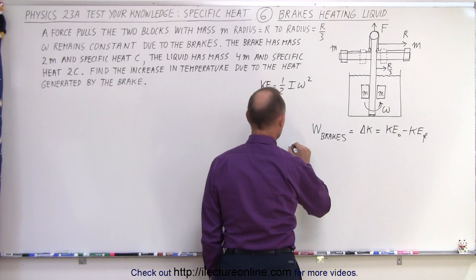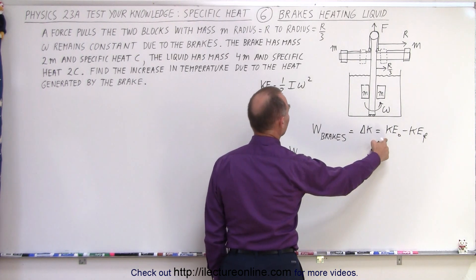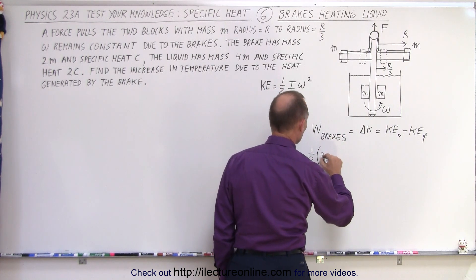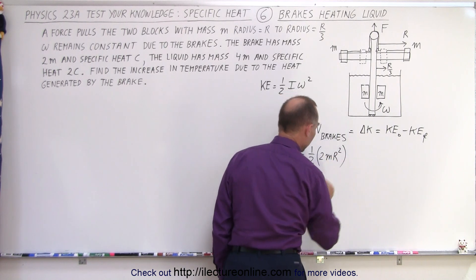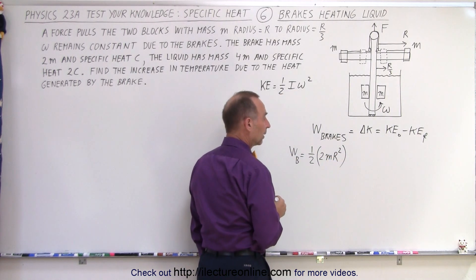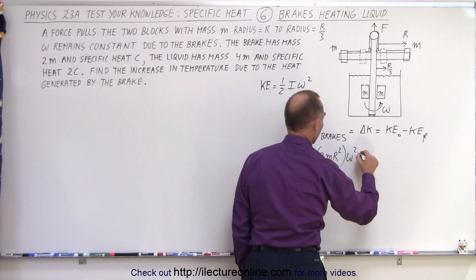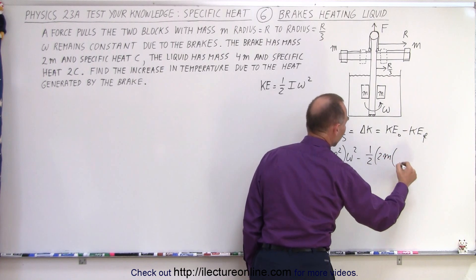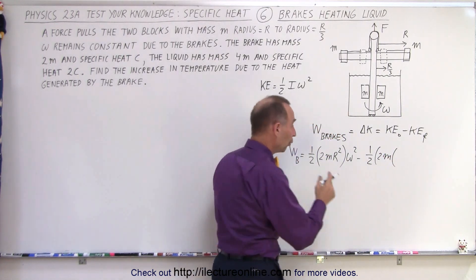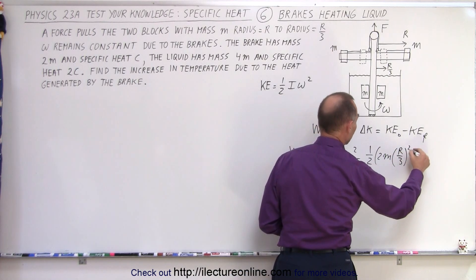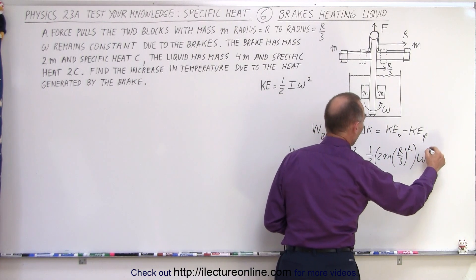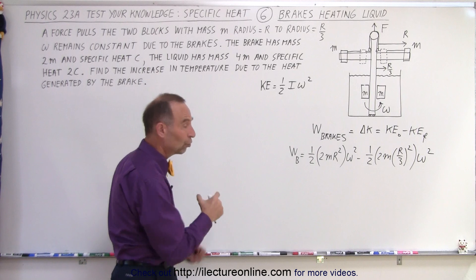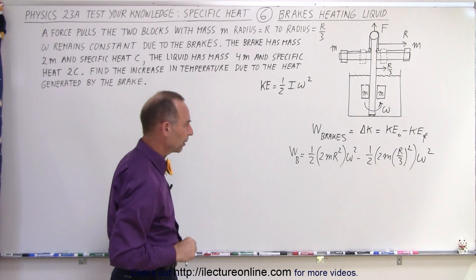Which means that the work done by the brakes is equal to kinetic energy initial, which is 1 half, the moment of inertia of the two masses, that would be 2M times the distance r squared, times omega squared, minus kinetic energy final, which is 1 half, 2M times, now the radius is reduced to a third of its original value, r over 3 quantity squared, times omega squared. So that is the difference in the kinetic energy of the two rotating masses, which is the work done by the brakes, equal to the work done by the brakes.